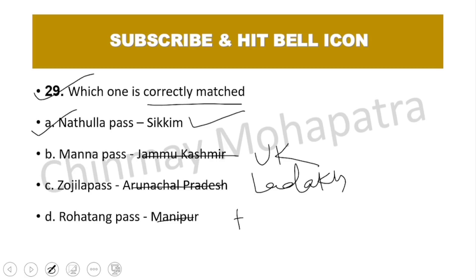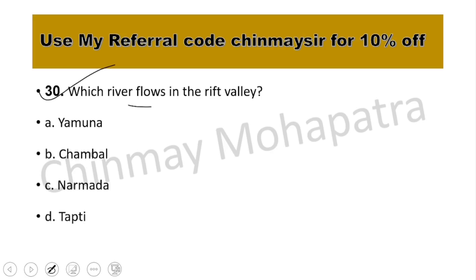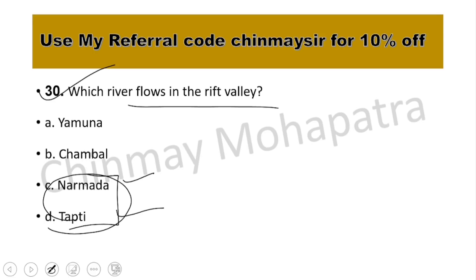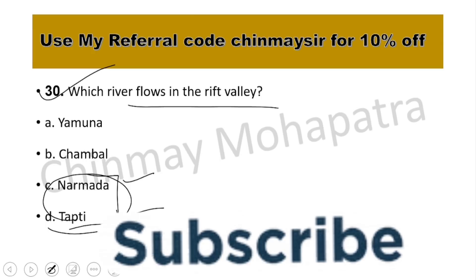Question number 30: Which river flows in the Rift Valley? Both Narmada and Tapti flow in the Rift Valley — they are west-flowing rivers that fall in the Arabian Sea. This type of question has good chances of appearing, so note it carefully. Let's move on.